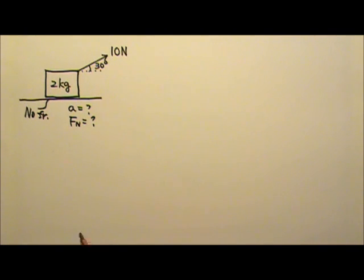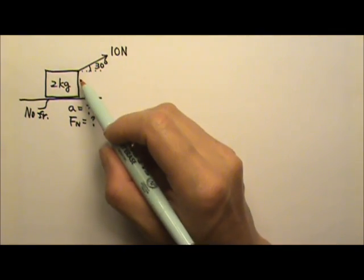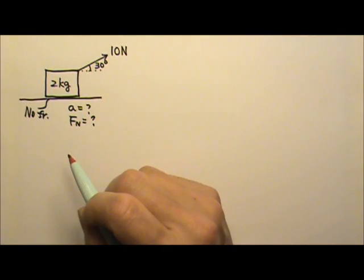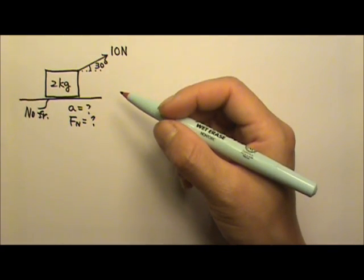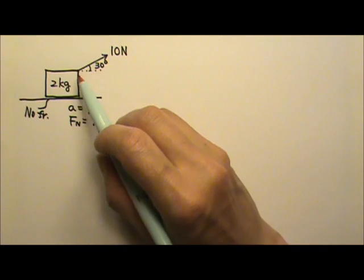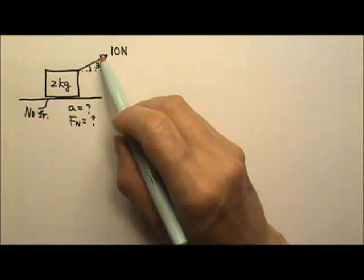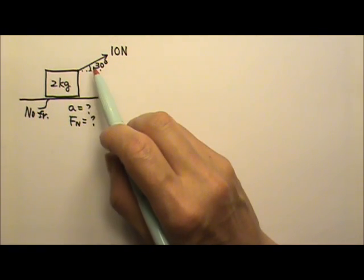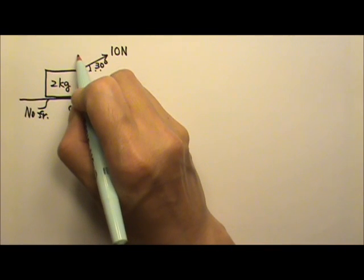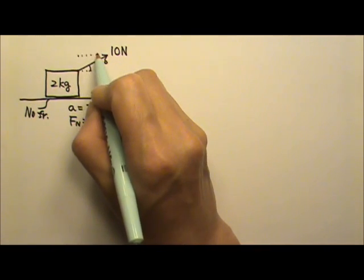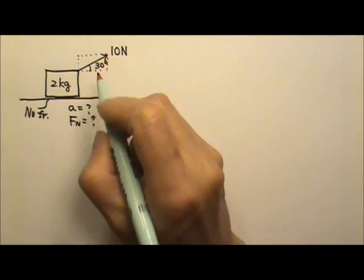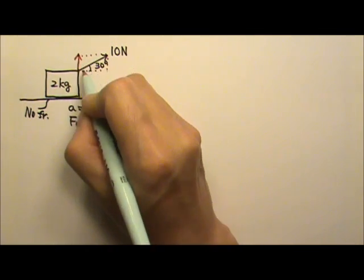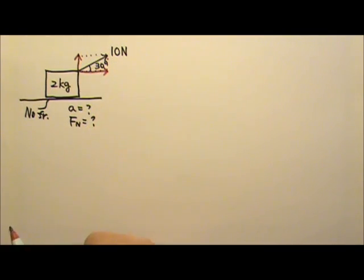So we have a slanted force. Suppose we don't know whether the box is going to get lifted or not — we'll have to figure that out first. To figure that out, we'll have to find the components for this slanted force. So just like what we did for projectile motion, we're going to make a rectangle, and these two are the horizontal and vertical components.